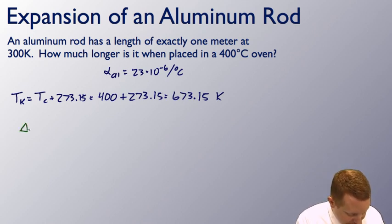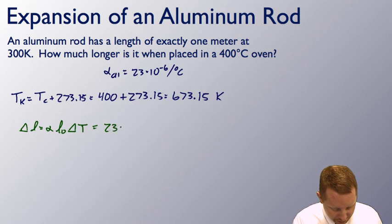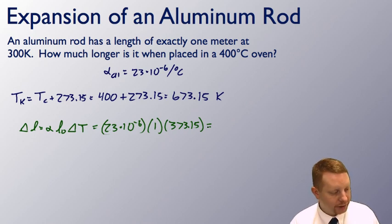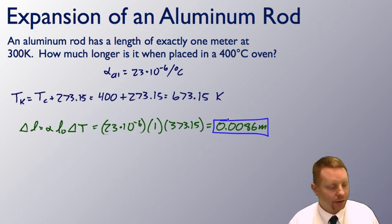To figure out how much longer it is, its change in length, we can go to change in length equals alpha L initial delta T, which is going to be 23 times 10 to the minus 6 per degree Celsius times its initial length, 1 meter, and the change in temperature from 673.15 K to 300 K is just 373.15 K. Put all that into my calculator, I come up with a change in length of about 0.0086 meter.